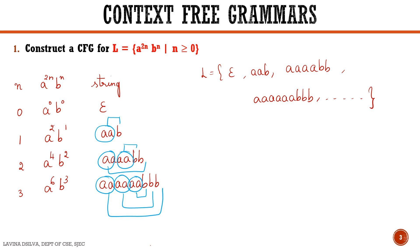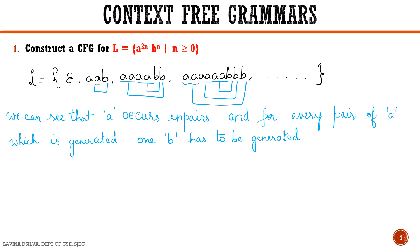We have the concept of recursiveness in this problem. One rule is generated for the minimum string, so the minimum string rule is given by S tends to epsilon. Since a's occur in pairs and for every pair of a's one b has to be generated, if we want this pattern to occur more than once we construct a recursive rule. So S tends to aaSb is our recursive rule.